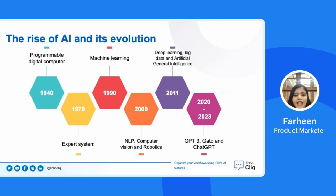In the 1990s, AI embraced machine learning, a technology we use even today. The early 2000s saw significant progress in natural language processing, computer vision, and robotics, while 2011 brought advancements in deep learning, big data, and artificial general intelligence. The invention of GPT-3 by OpenAI in 2020 and GATO by DeepMind in 2022 were two huge milestones in the history of AI.